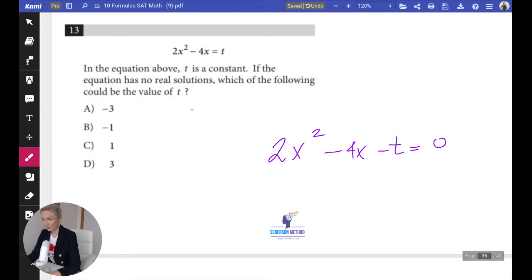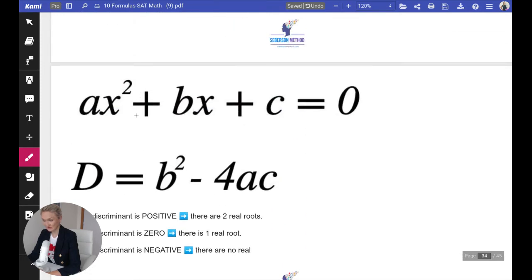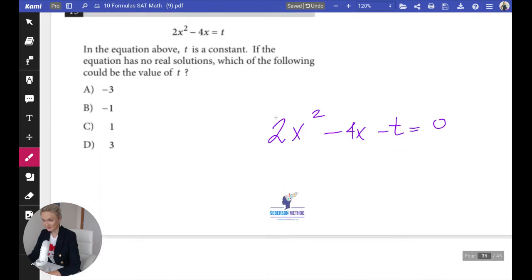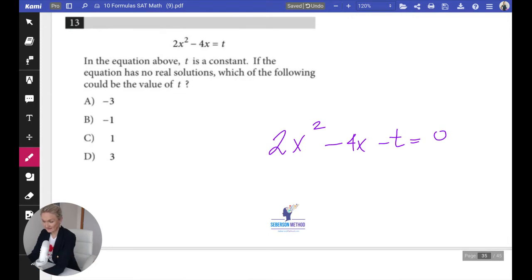So remember how we talked about a classical quadratic equation ax² + bx + c? Here my a is 2, my b is negative 4, and my c is negative t.